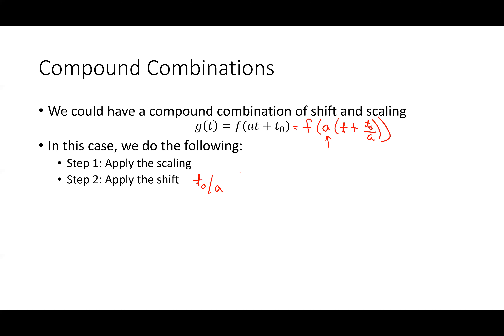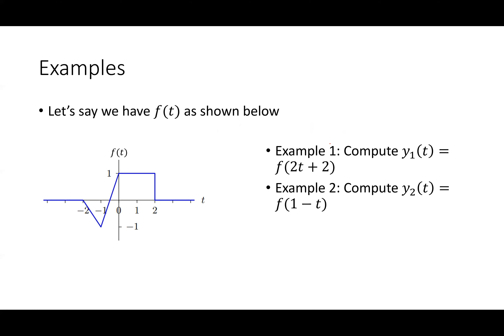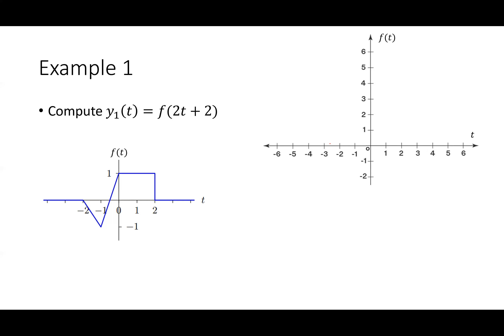I have to look at it that way — apply the scaling first, then the shifting. So let's look at an example. I've got signal F of T, which is some kind of pulse. I want to compute Y1 of T equals F of 2T plus 1, and example two is F of 1 minus T. Both are a combination of scaling and shifting.